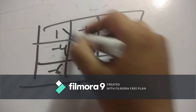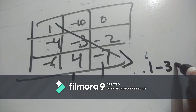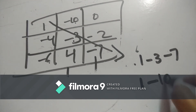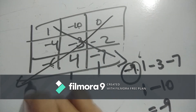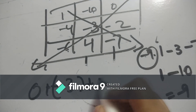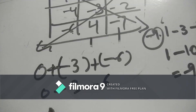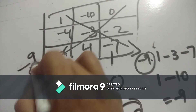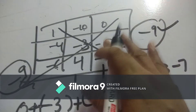Checking diagonals: first diagonal 1 minus 3 minus 7 — adding gives minus 10, then minus 9. Value is minus 9. Second diagonal: 0 plus minus 3 plus minus 6 gives minus 9. Both diagonals give minus 9. Since all rows, columns, and diagonals give the same sum of minus 9, it is a magic box.